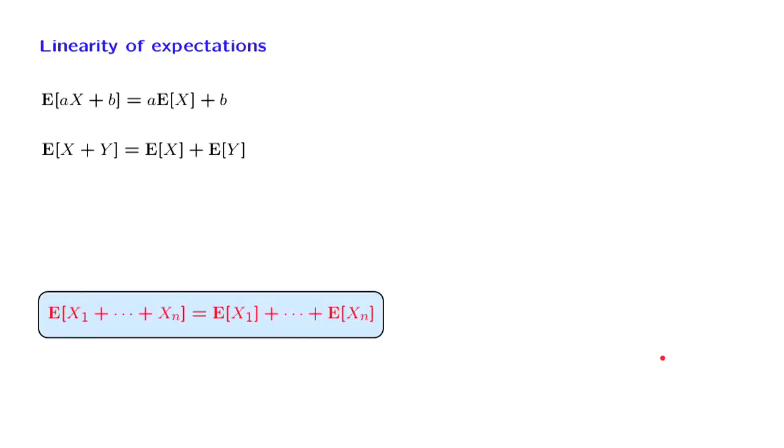Of course, we proved the linearity property for the case of the sum of two random variables. But you can proceed in a similar way, or maybe use induction. And one can easily establish, by following the same kind of arrangement, that we have a linearity property when we add any finite number of random variables. The expected value of a sum is the sum of the expected values.